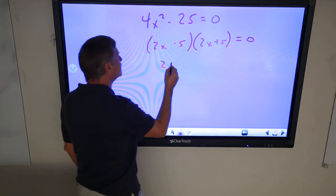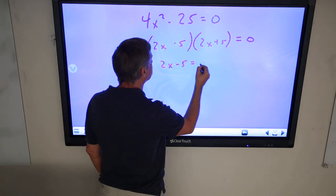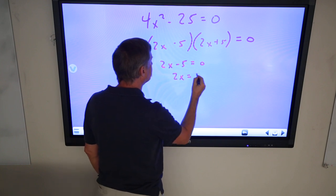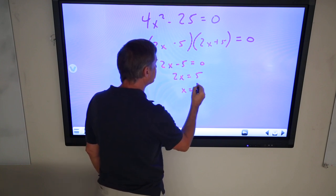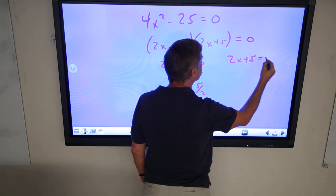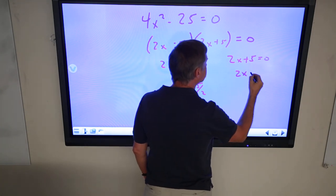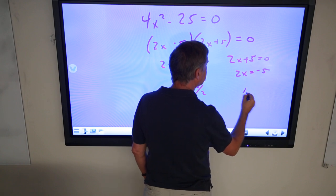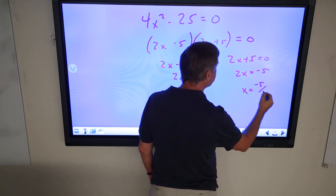So, we set them equal to 0, 2x minus 5 equals 0, 2x equals 5, x equals 5/2. 2x plus 5 equals 0, 2x equals minus 5, x equals minus 5/2.